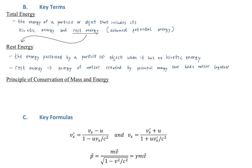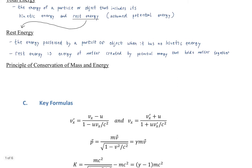Rest energy is the energy of matter itself — it's created by the potential energy that holds matter together. Matter is built by fundamental forces such as the strong and weak nuclear force. Since matter is held together by potential energy, that energy can be released and become kinetic energy. That's the rest energy of matter, and it has big consequences for fusion and fission — nuclear processes that release energy.